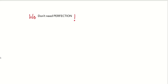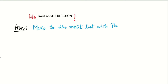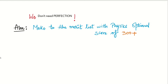So what is our aim? Our aim is to make it to the merit list — a physics optional score of 300 plus. This is our aim. If we know our aim, we can very well make the strategy out of it.